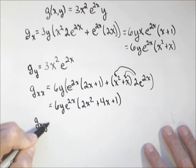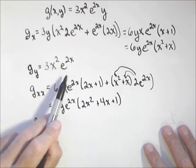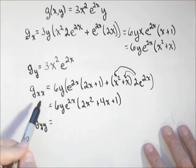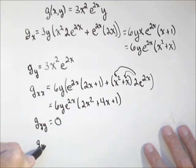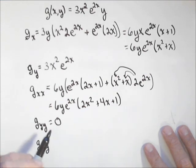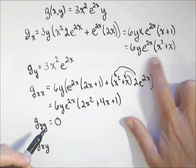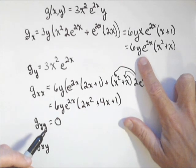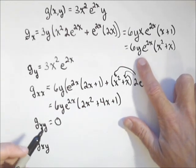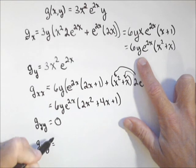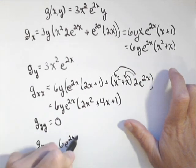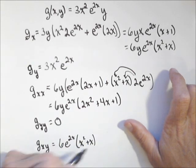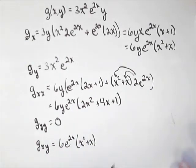G sub y y — there's no y term in g sub y, so it's a constant as far as we're concerned, and its second-order partial is zero. Now, let's look for our mixed-order partials and make sure they come out the same. G sub x with respect to y — here was g sub x. We're taking the derivative with respect to y, which makes everything in terms of x a constant. The derivative of y is one, so we'll have six e to the two x times x squared plus x.